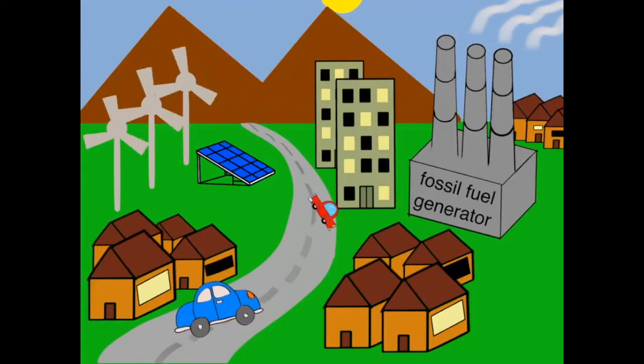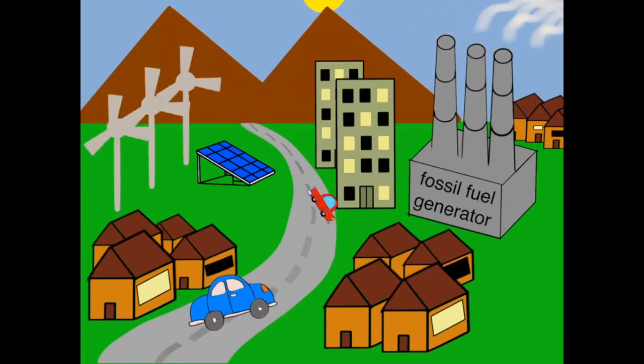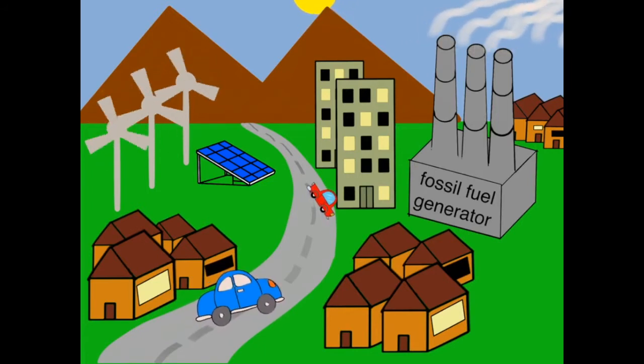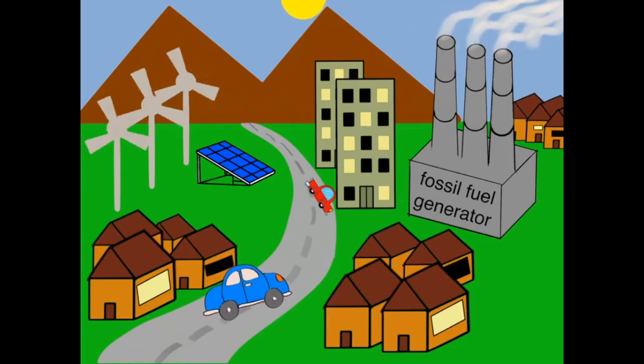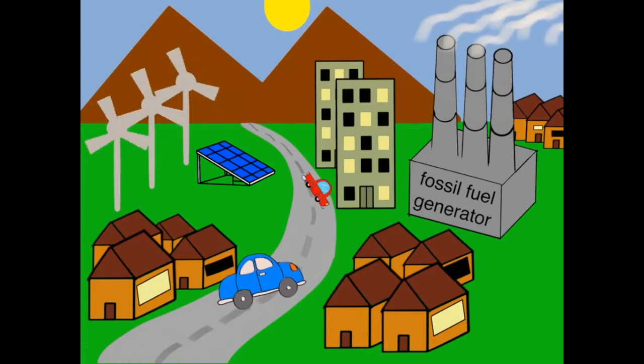In our research, we are developing algorithms to increase the scale of this strategy. How do we coordinate the actions of millions of households in a city, state, or even a nation so that together they can absorb the volatility of renewables without requiring a central authority?